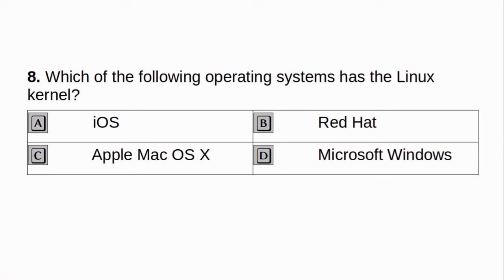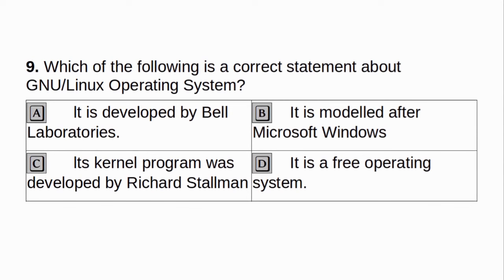Which of the following operating system has the Linux kernel? a. iOS. b. Red Hat. c. Apple Mac OS X. d. Microsoft Windows. Answer: b. Red Hat. Which of the following is a correct statement about GNU Linux operating system? a. It is developed by Bell Laboratories. b. It is modeled after Microsoft Windows. c. Its kernel program was developed by Richard Stallman. d. It is a free operating system. Answer: d. It is a free operating system.